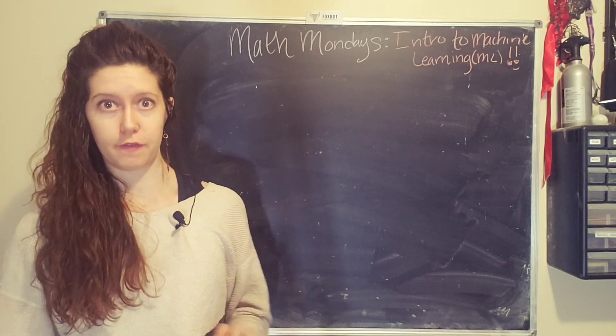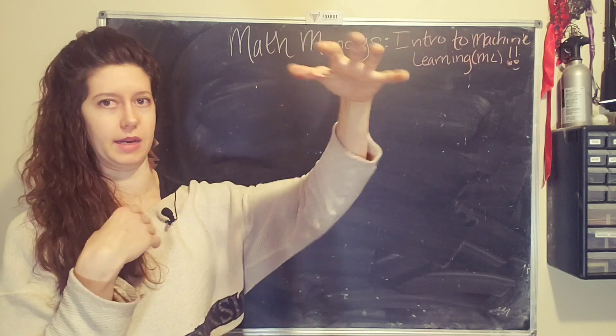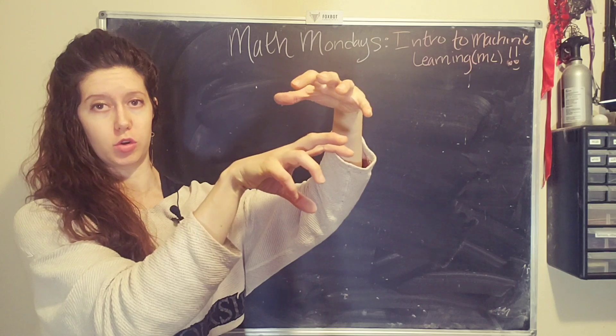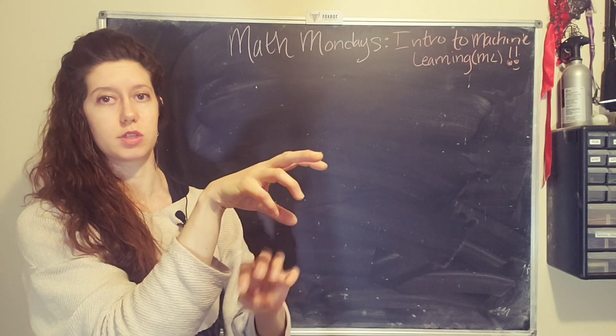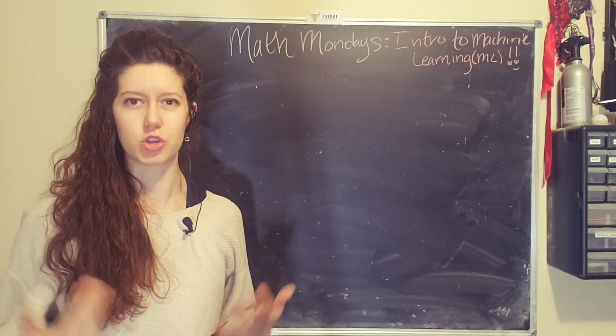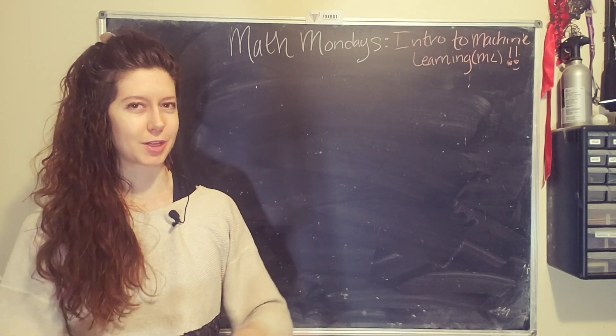To first clarify, machine learning is actually a subset of AI. So you have AI up here, and then you have a subset of AI called machine learning. And within machine learning, there's a number of different categories. One of the common ones is called deep learning, which uses what is called neural networks. Don't worry about that right now. We're going to start with the basics.